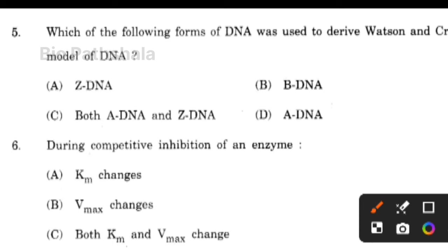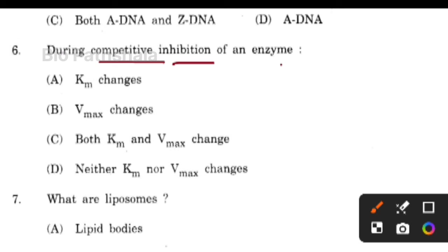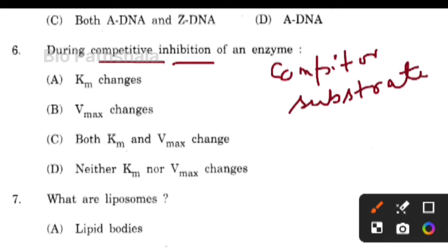Next question: during competitive inhibition of an enzyme, which value is affected? During competitive inhibition, the competitor competes with the substrate for the active site of the enzyme. So K_M is the amount of substrate — the amount of substrate required increases because both compete for the enzyme's active site. So the value of K_M changes. The correct option is option number A.